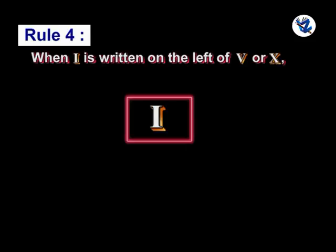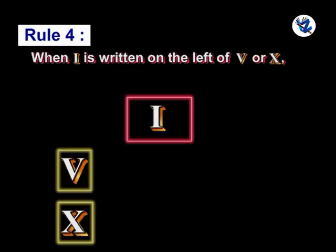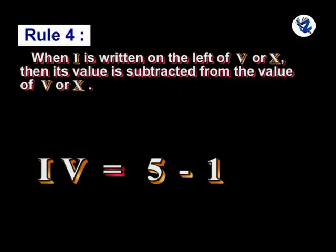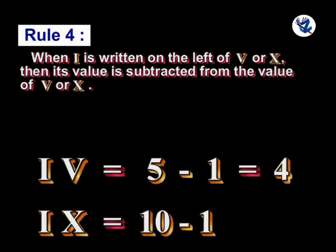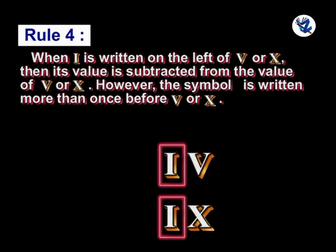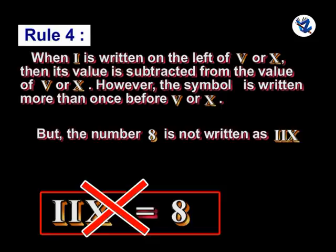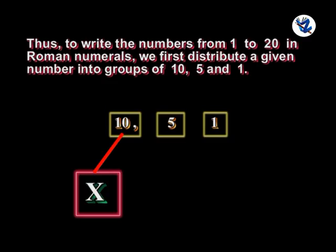Rule 4: When I is written on the left of V or X, its value is subtracted from the value of V or X. For example, IV is equal to 5 minus 1, which equals 4, and IX is equal to 10 minus 1, which equals 9. However, the symbol I is not written more than once before V or X. Therefore, 8 is not written as IIX.